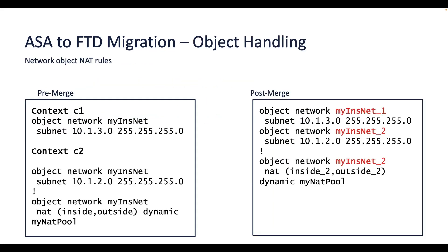Now let's take a look at some of the use cases of objects with conflict when migrating different contexts and how the tool handles it. If there are conflicting interface names, the names are updated in the contexts following the naming convention.